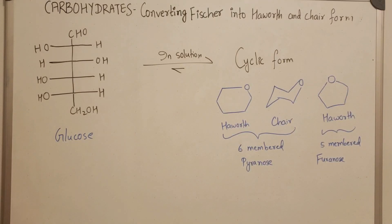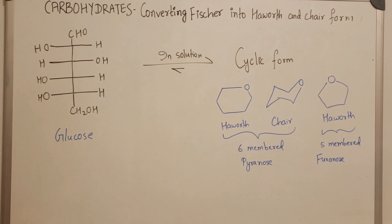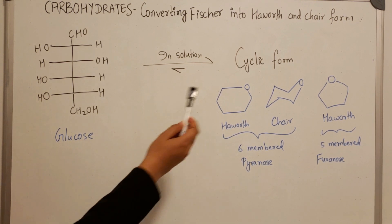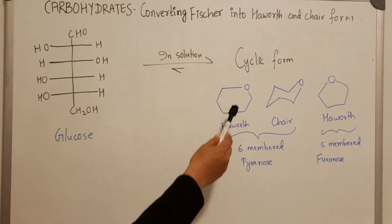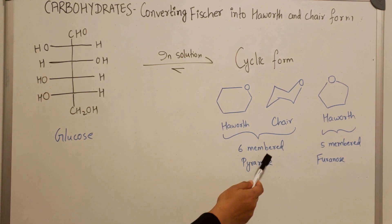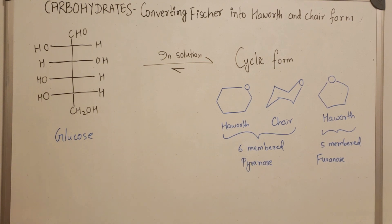Fischer projection is just a way to represent carbohydrates in open chain form. In solution, more than 99% of carbohydrates exist in the cyclic form. It could be either a six-membered ring containing oxygen, which is called pyranose, or a five-membered ring containing oxygen, which is called furanose.